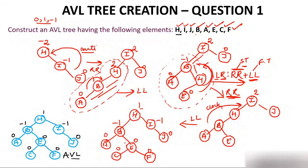The main thing to keep in mind: the moment you insert any node, first calculate the balance factor. If the balance factor is 0, 1, or minus 1, the tree is balanced. If after inserting a node the balance factor becomes other than 0, 1, or minus 1, determine which rotation should take place — LL, RR, LR, or RL — and perform it. After rotation, check the balance factor again. It will definitely become balanced.